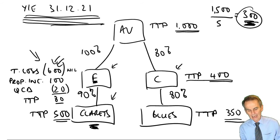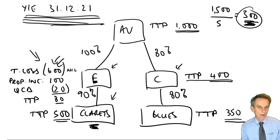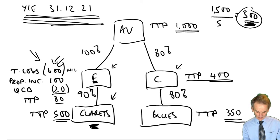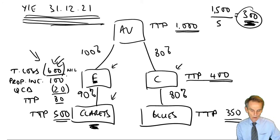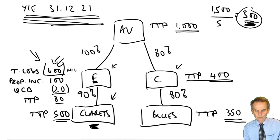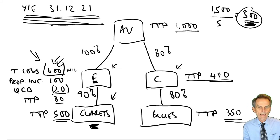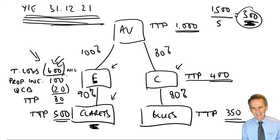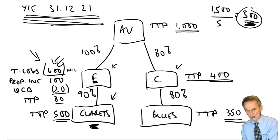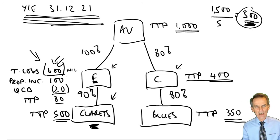So that's the significance of related 51% group companies, and that's going to impact the possible uses of the loss made by Company F — the trading loss of £600,000 — and the objectives we strive to achieve. Looking at our loss, we've got a trading loss of £600,000. Let's have a look at what the objectives are.